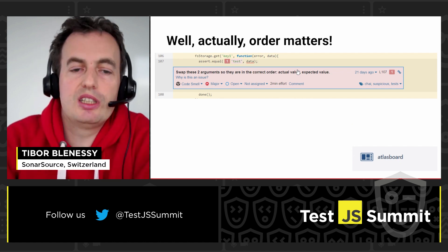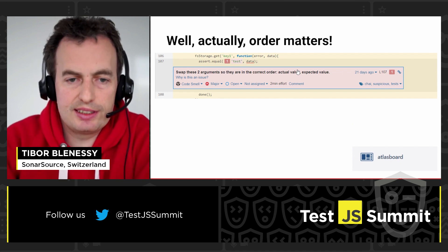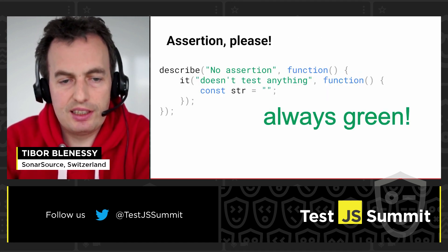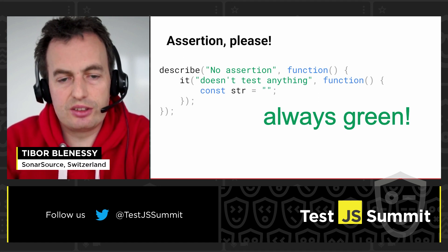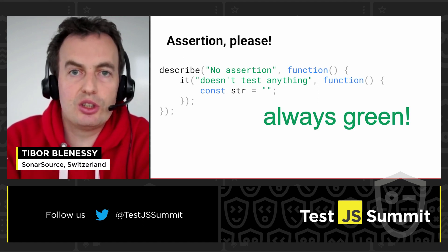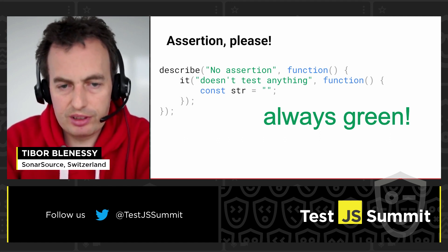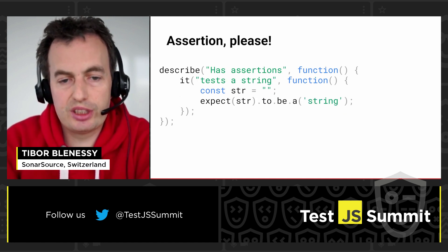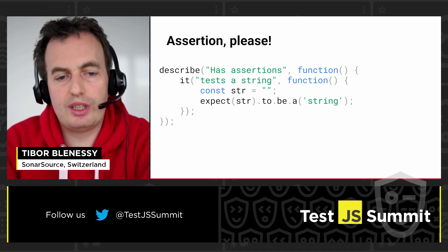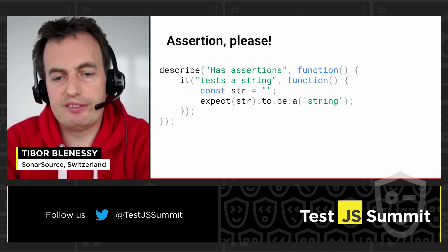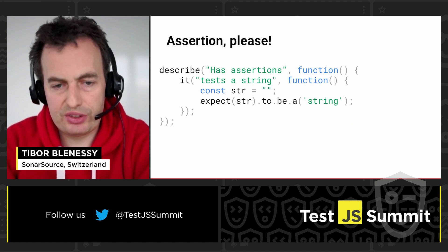The third issue I would like to show you in this lightning talk is the following one. Imagine you have a test and this test is going to be always green — because there is actually no assertion in it, so you are not testing anything. To fix this test, you should actually assert something, for example asserting that a string has the value of string.